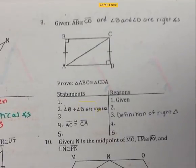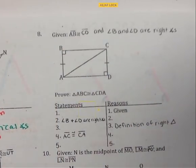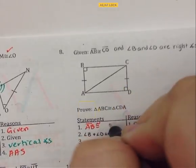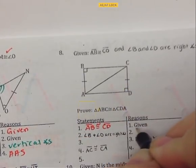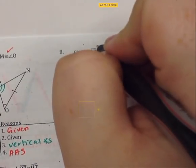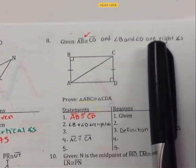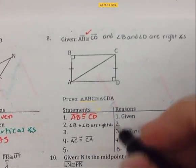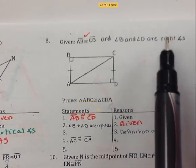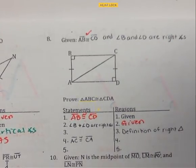Example eight. Given that segment AB is congruent to segment CD — we can write that down and put a check mark because it's in our proof and it's congruent. Then it says angle B and angle D are right angles; the reason is given. But it says they are right angles, not that they are congruent, so I cannot put a check mark on them yet.